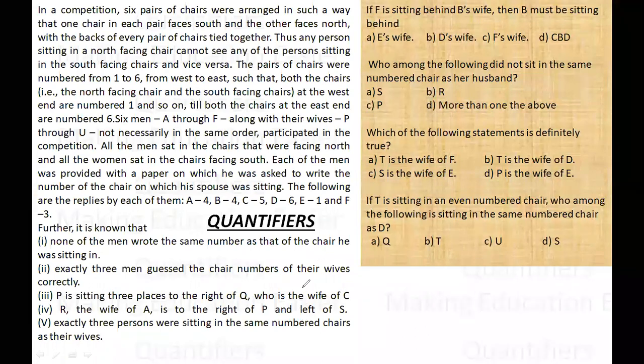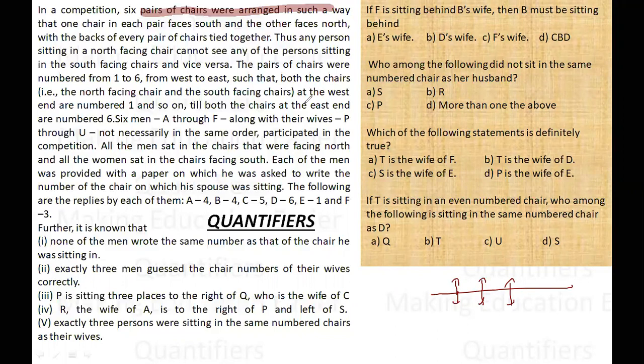Now what does this set talk about? It says in a competition there are six pairs of chairs which are arranged in such a way that one chair in each pair faces south and the other faces north. Any person sitting in the north face cannot see the person behind that was south, and vice versa.